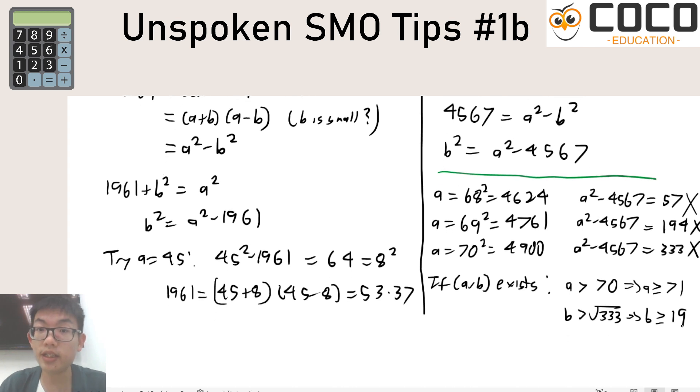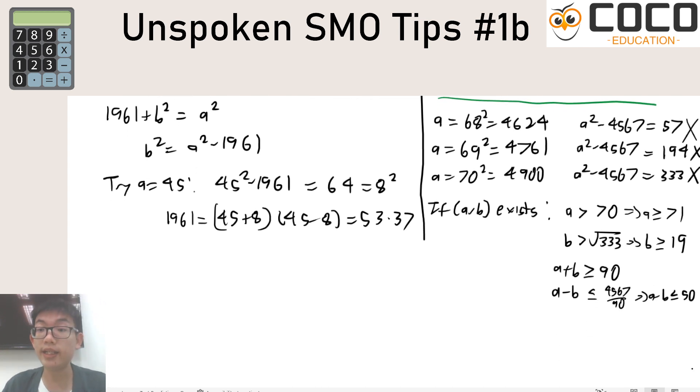Now this would imply that in your factorization of a plus b times a minus b, a plus b is at least 90, which means that a minus b is less than or equal to 4567 over 90, which means that it is at most 50. Now the implication of this is that the smaller factor should be less than 50, and so if a prime factor exists it should be less than 50, and in fact what this means is that we have ruled out all these prime numbers 53, 59, 61 and 67 have been excluded from here without us actually doing division.